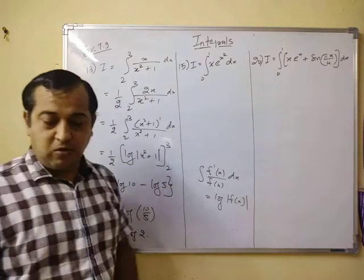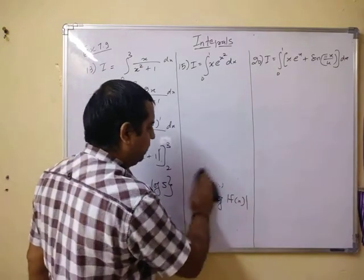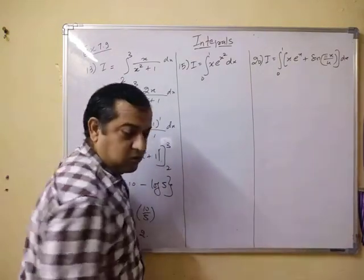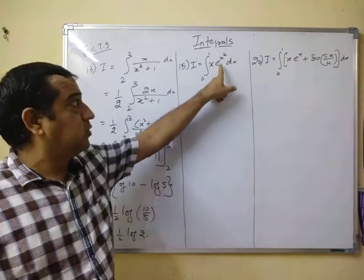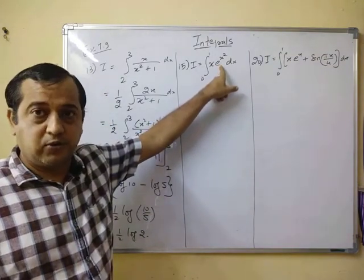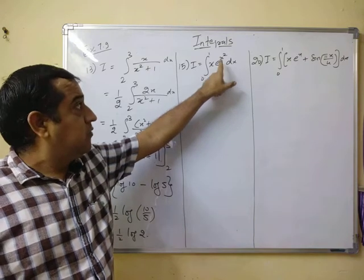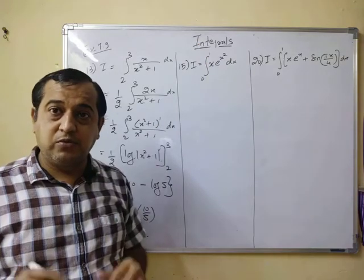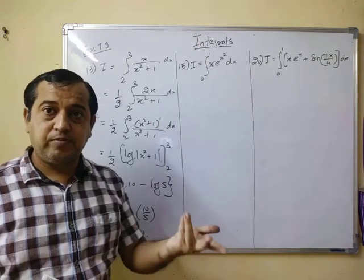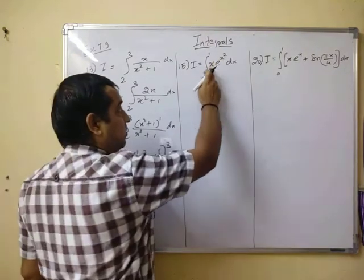Proceeding further we come to this question. Now in this case remember one thing, no need to apply u into v rule. No need to apply u into v rule because you don't know what is the integral of e raise to x square. So what you have to do, you can see for the power of e you are having x square unusual term. Means we can proceed with doing the substitution. And derivative of x square is 2x which is present here.